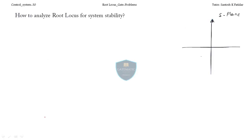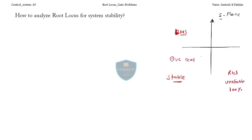For stability, we check the location of poles in the s-plane. If your poles are in the left-hand side (LHS) or have a negative real part, the system will be stable. If your poles are in the RHS, the system will be 100% unstable. If your poles are lying on the imaginary axis, the system will be marginally stable.